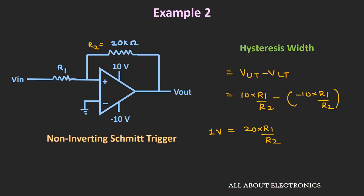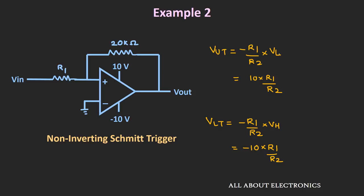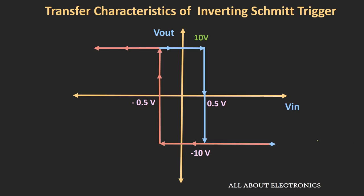With R1 = 1 kΩ, the upper threshold voltage equals +0.5V and the lower threshold voltage equals −0.5V. If you see the hysteresis curve for this circuit, the difference between upper and lower threshold voltages — the hysteresis width — is equal to 1V.